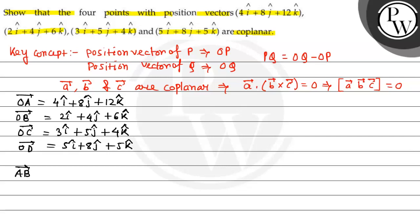First we'll find AB. AB is equal to OB minus OA. So OB minus OA, that is equal to -2i - 4j - 6k. That is the AB vector.